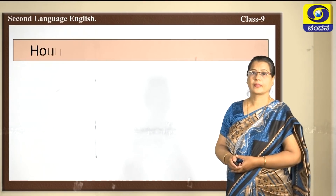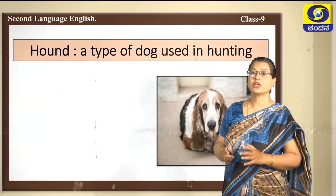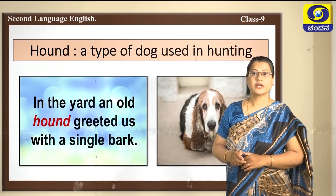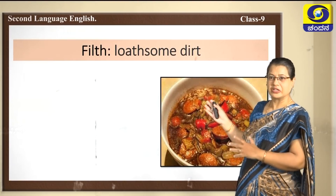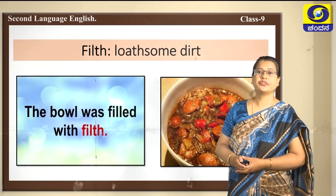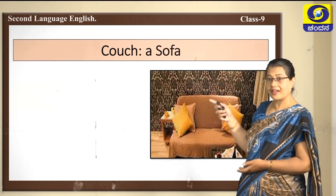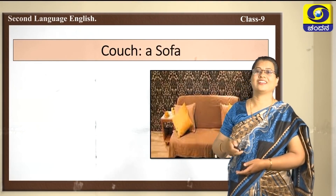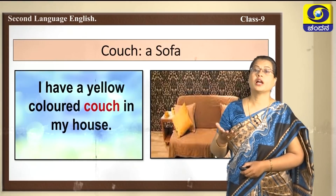Next word: hound — a type of dog used in hunting, especially used for the purpose of hunting. Usage: 'In the yard, an old hound greeted us with a single bark.' Filth — loathsome dirt. Usage: 'The bowl was filled with filth.' Next word: couch — a sofa. In the scene, Jean Valjean was sleeping on the couch recalling his 19 years in the galleys. Usage: 'I have a yellow colored couch in my house.'